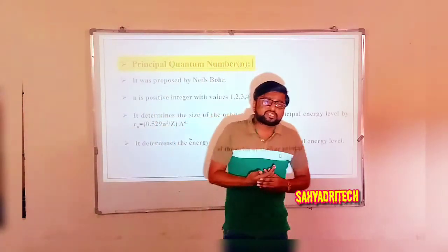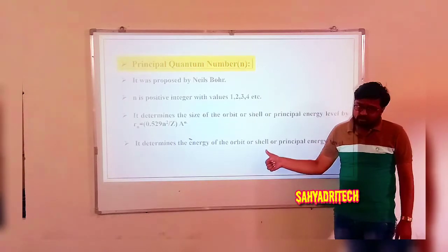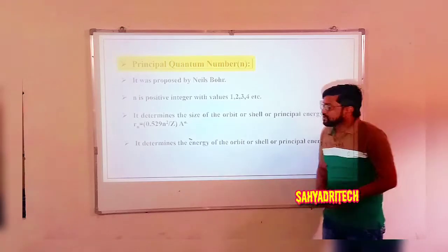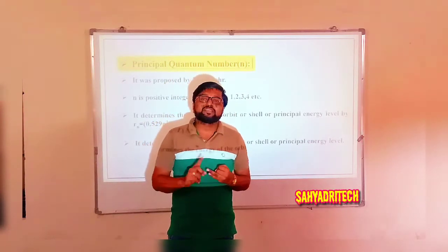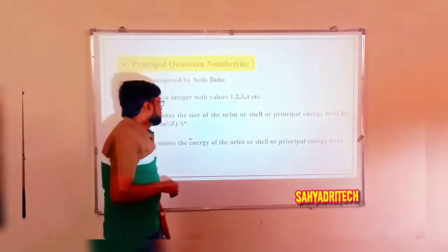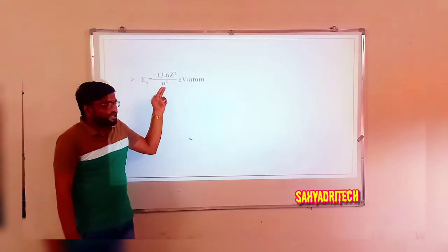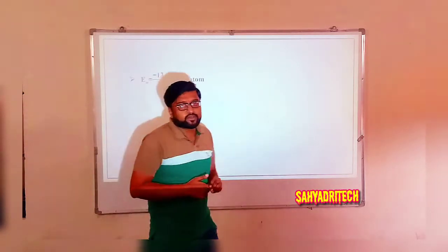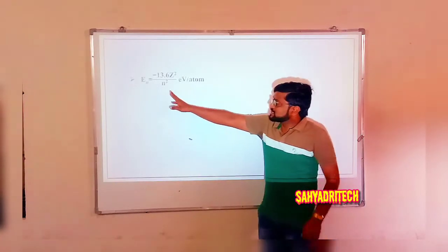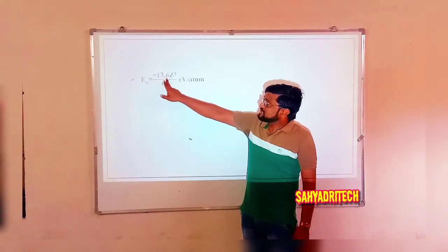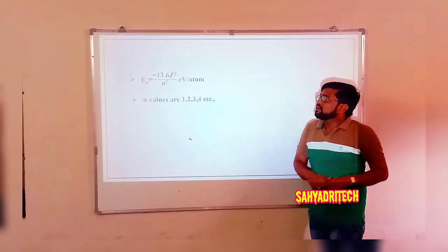A second significance of the principal quantum number is that it determines the energy of the orbit or shell. The energy of the nth orbit is given by the general formula: E_n = −13.6 × z² / n² electron volts per atom. So the two significances are: it signifies the size of the orbit or shell, and it signifies the energy of the orbit or shell.